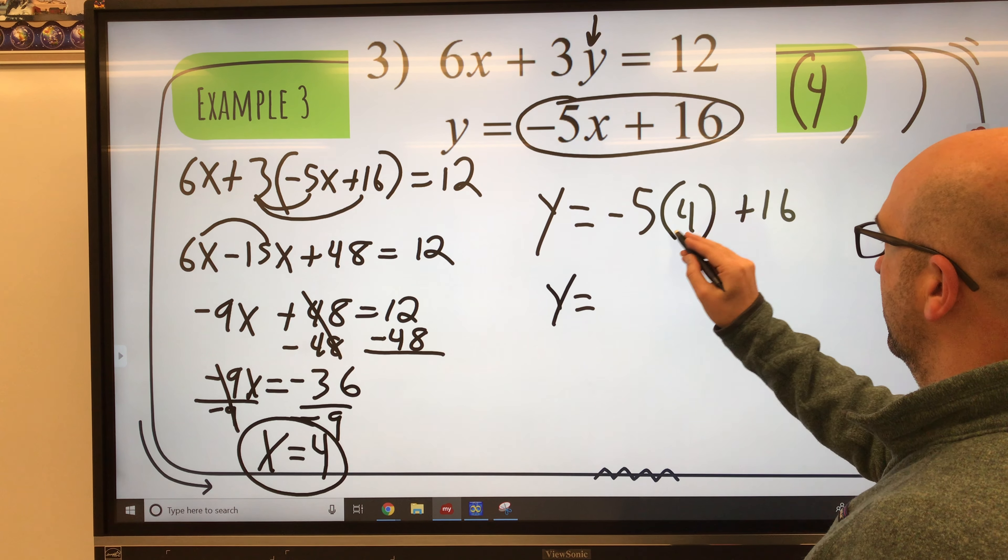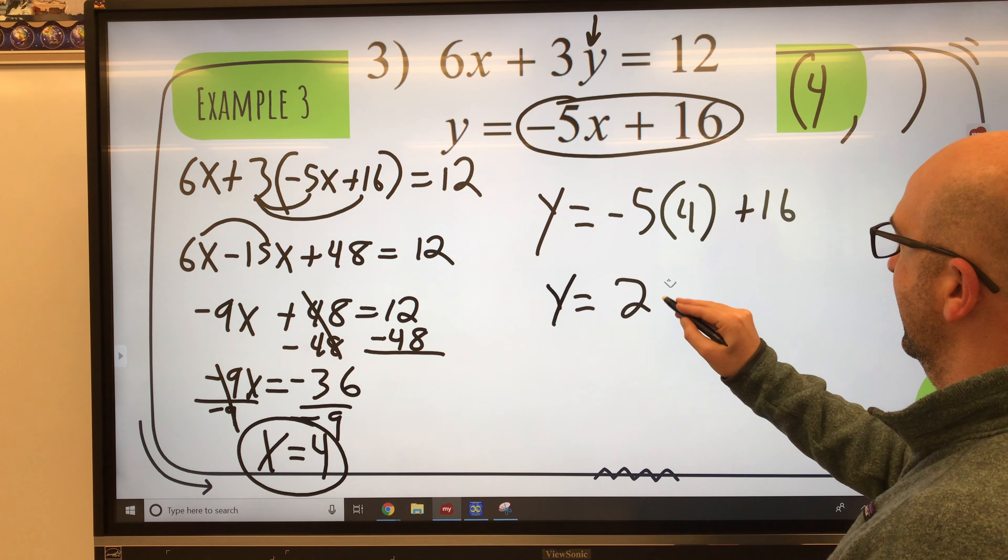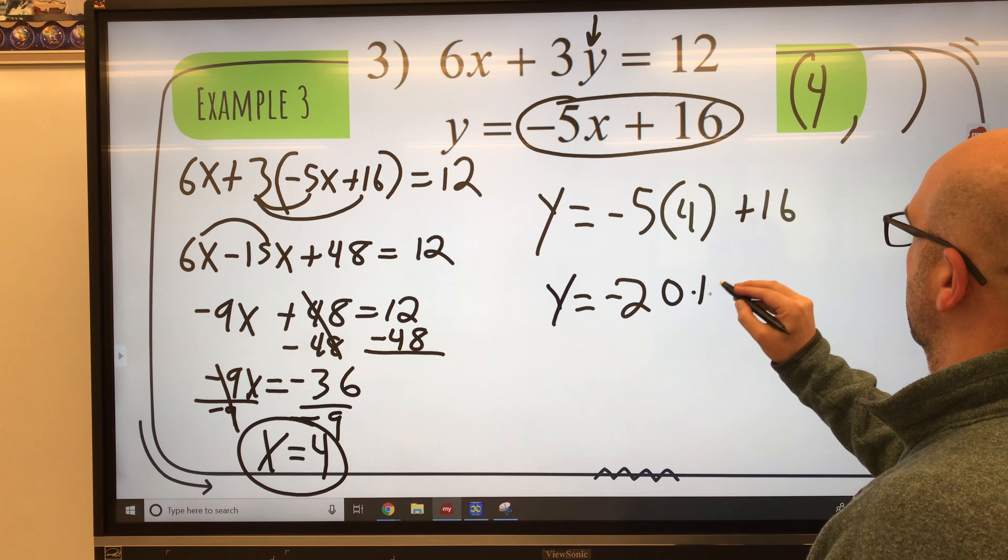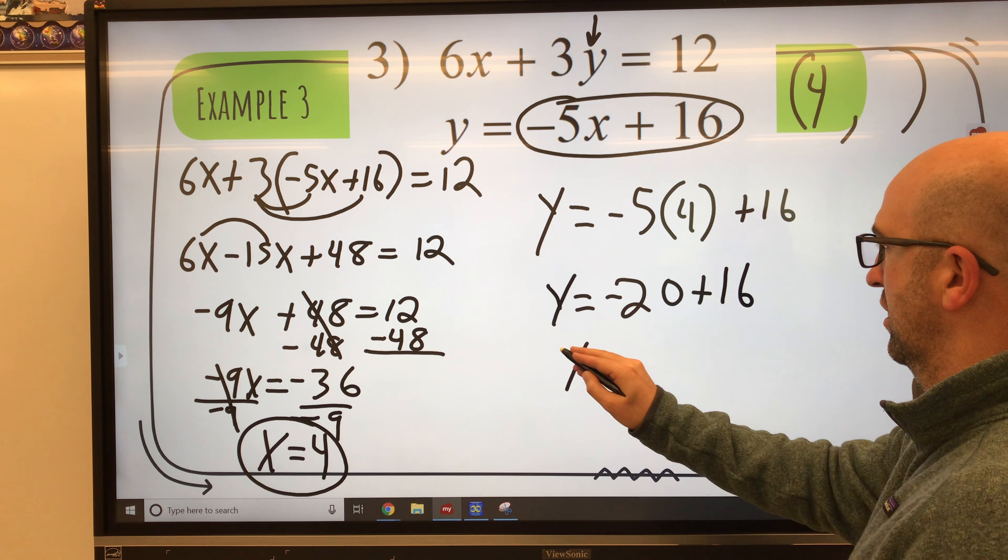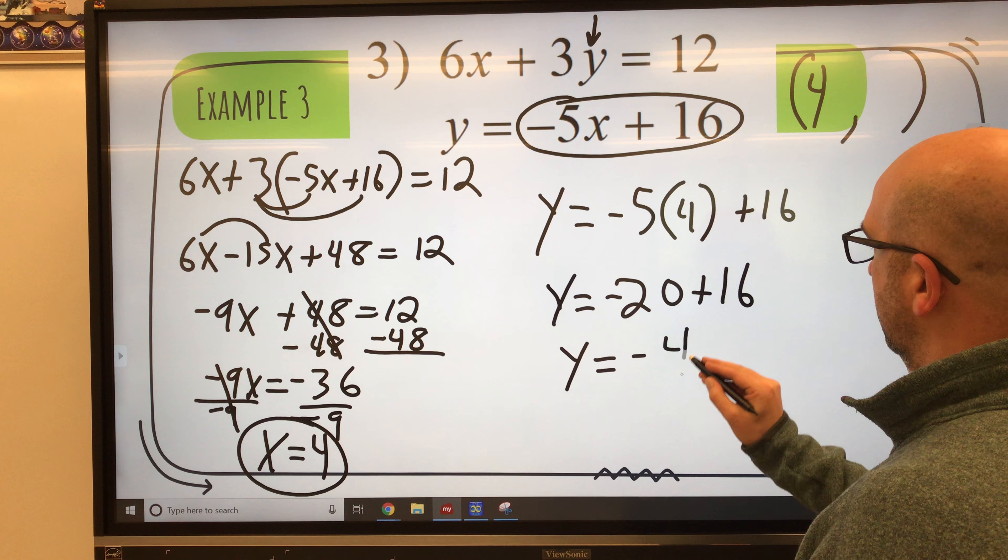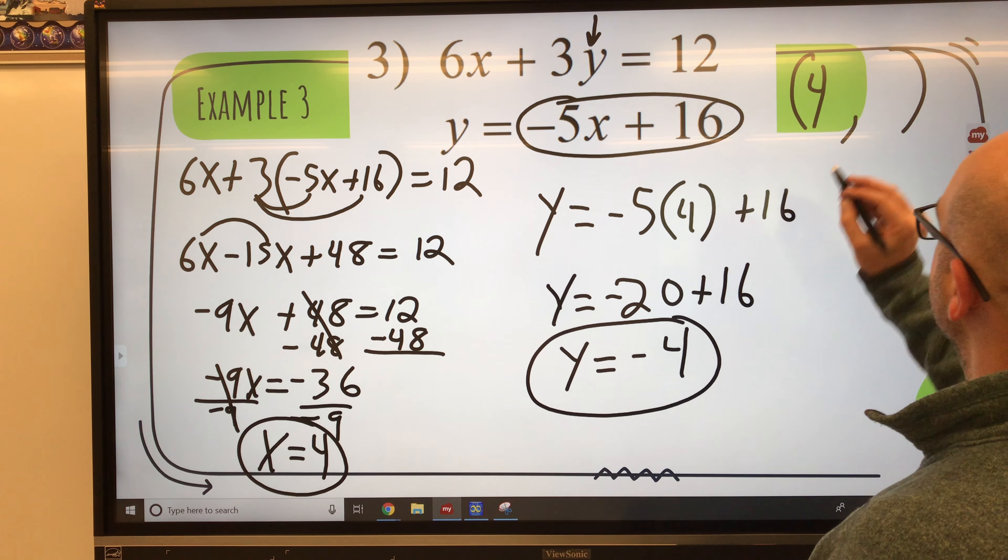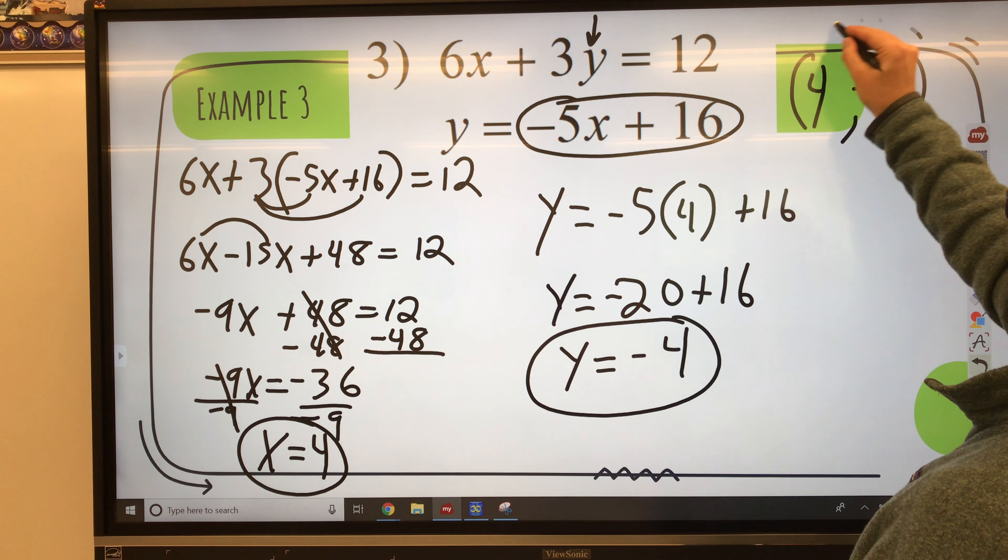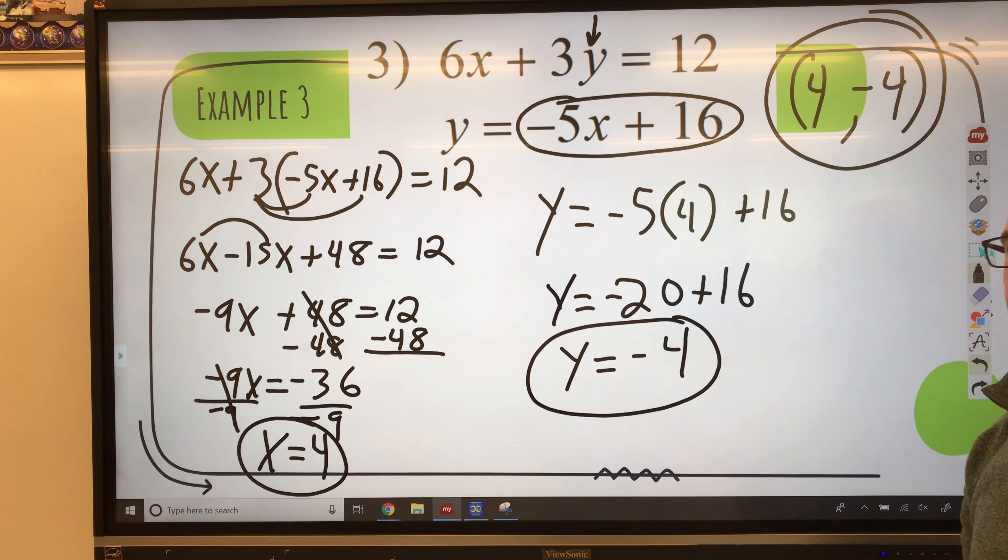Y equals, well, negative 5 times 4 is negative 20 plus 16. Negative 20 plus 16 is negative 4. So my solution set to that system of equations is 4, negative 4.